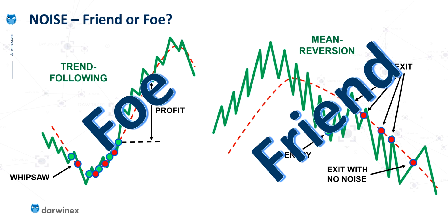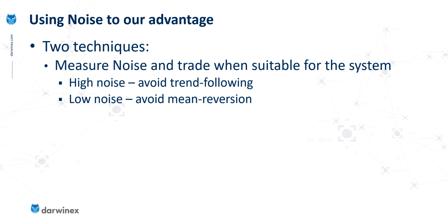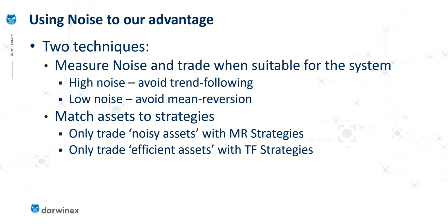If we are able to measure noise, this means we can take two potential approaches. Firstly, we can set rules so that we only trade particular systems when the noise is at the appropriate level advantageous to those. So for example, if noise is high, we'd avoid trend following strategies, and vice versa when noise is low. Another way is to match assets to strategies — some assets will be naturally more noisy than others, so we might only trade noisy assets with mean reversion strategies and quieter assets with trend following. But as we've said, we need to measure the noise.